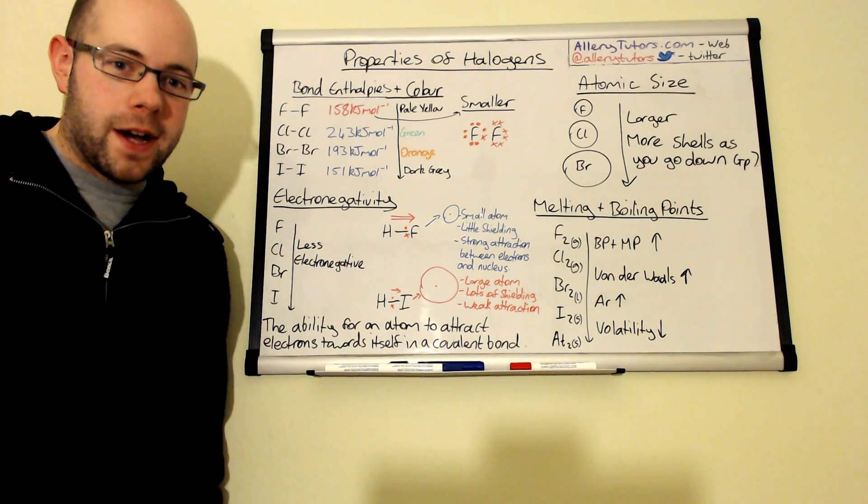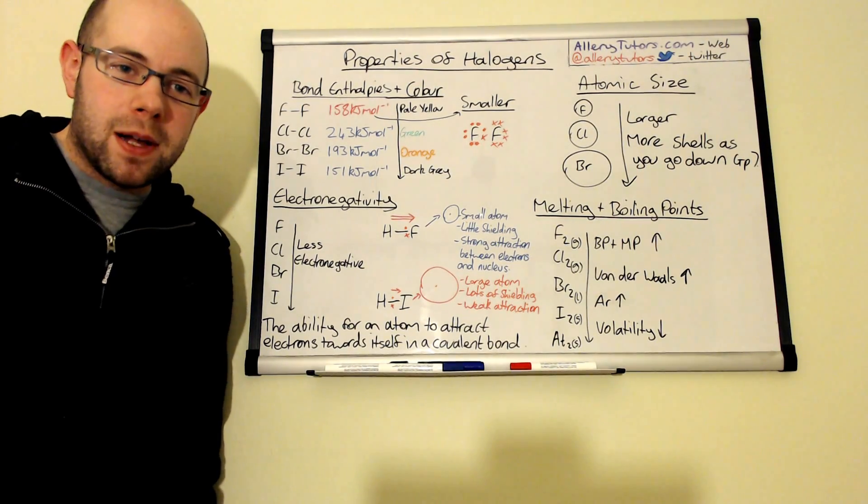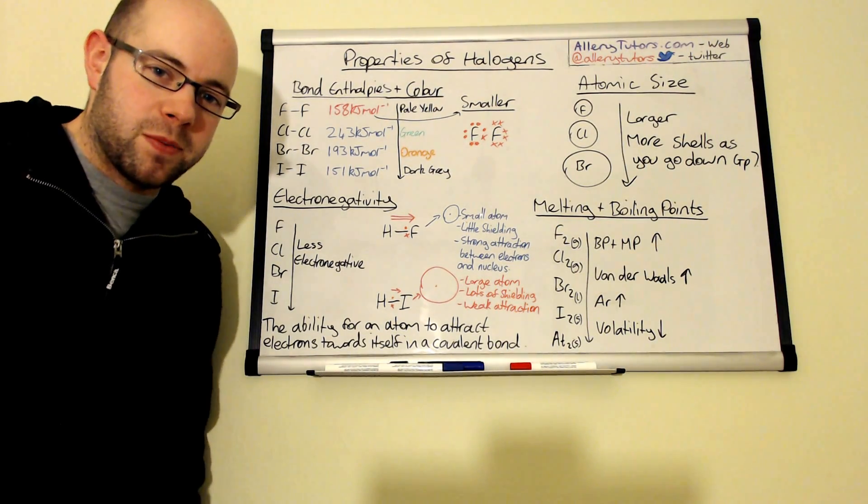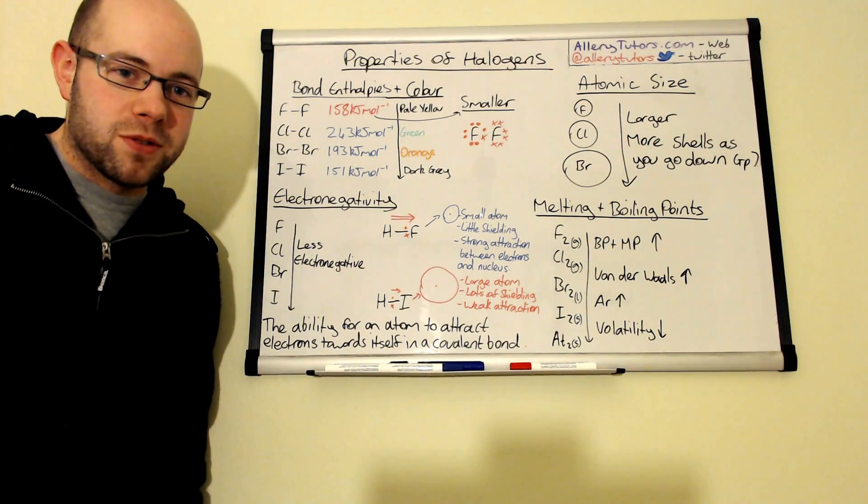Now the properties we're going to look at are electronegativity, melting and boiling points, atomic size, and we're going to look at bond enthalpies and the color of the halogens as well as we go down the group.